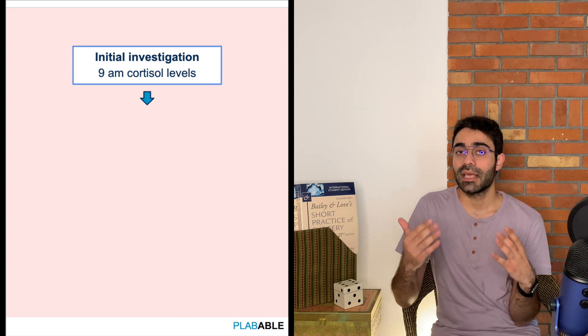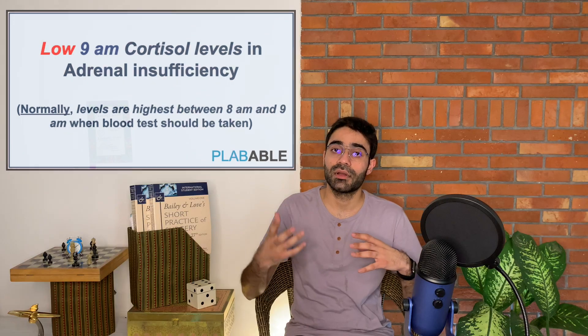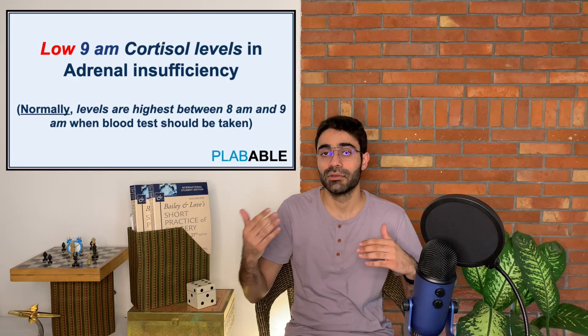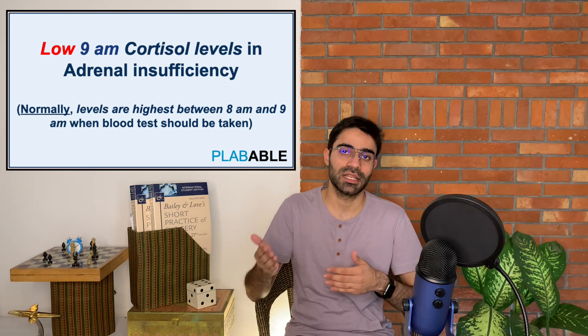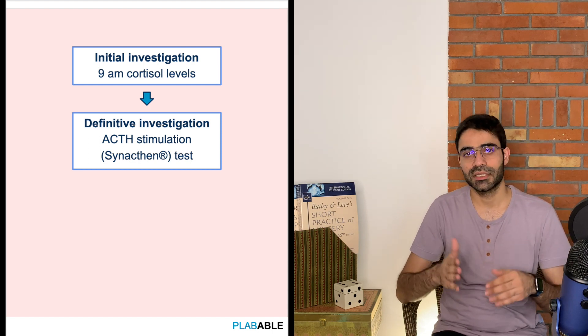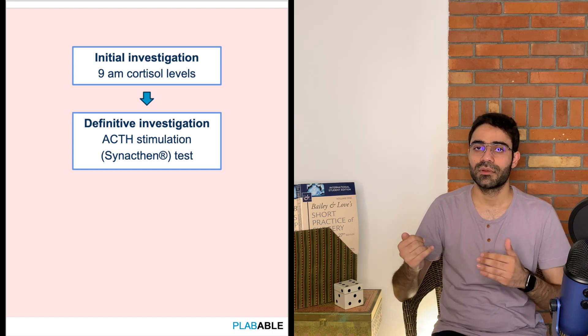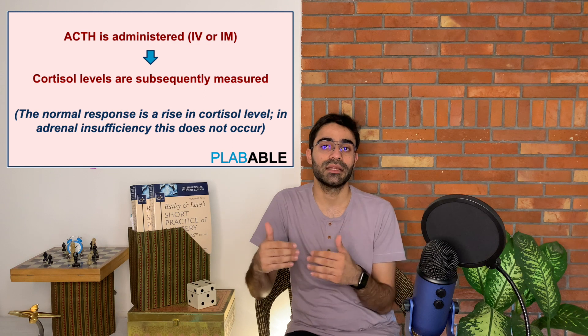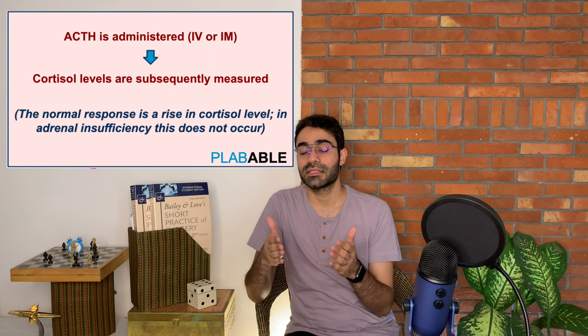When a patient of adrenal insufficiency presents, the first line of investigation is 9am serum cortisol, as cortisol levels are highest between 8am and 9am due to circadian rhythm. The confirmatory test is the ACTH stimulation test (Synacthen test). In Addison's disease, despite giving exogenous ACTH, the adrenal gland is unable to produce enough cortisol. In secondary adrenal insufficiency, where the adrenal gland is functioning normally, exogenous ACTH produces adequate cortisol. This test both confirms the diagnosis and differentiates between primary and secondary cases.